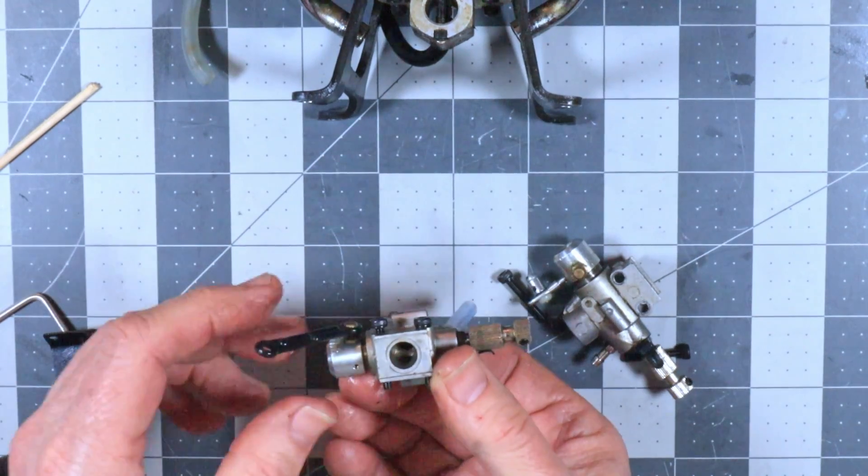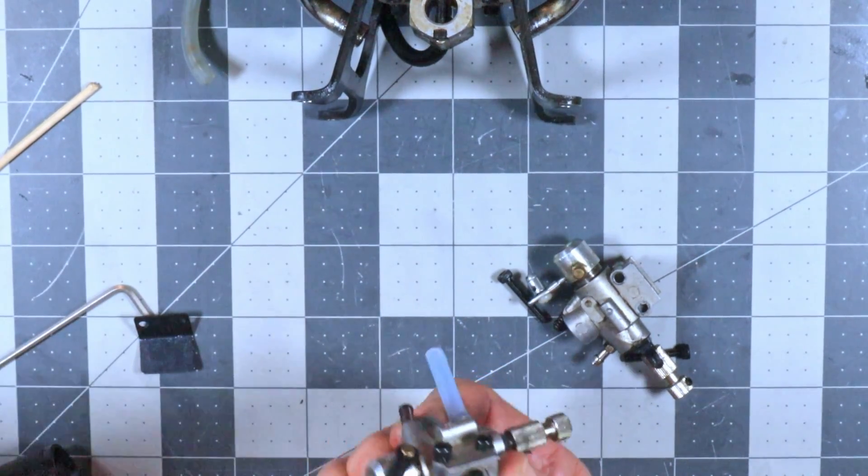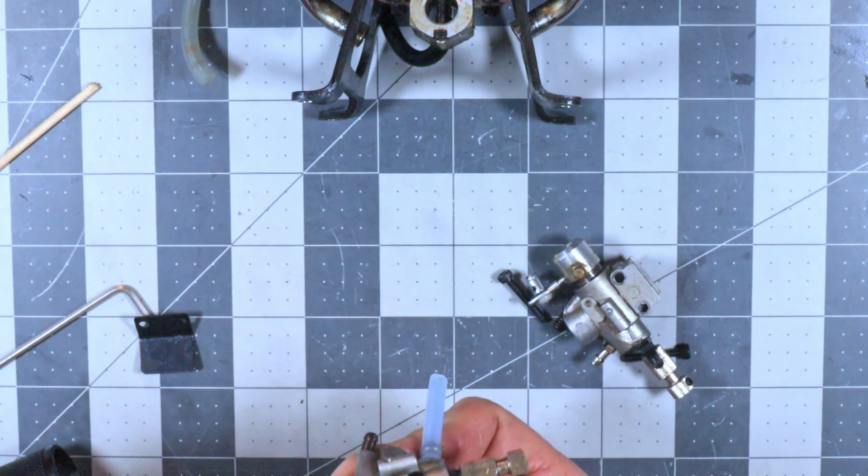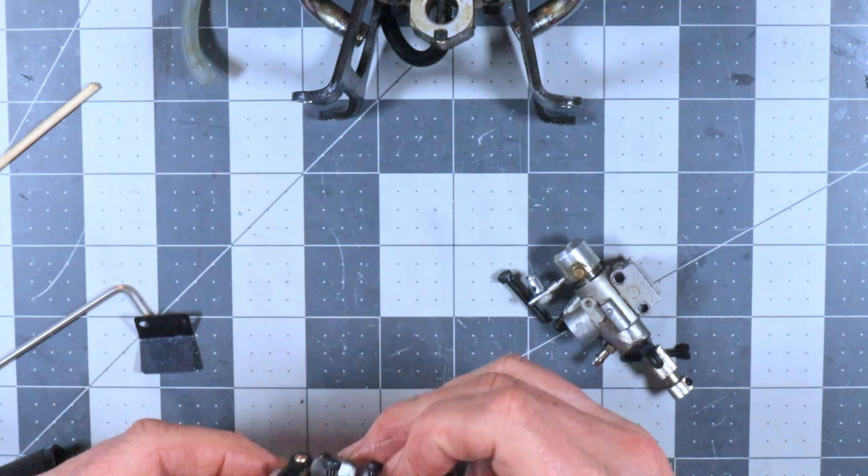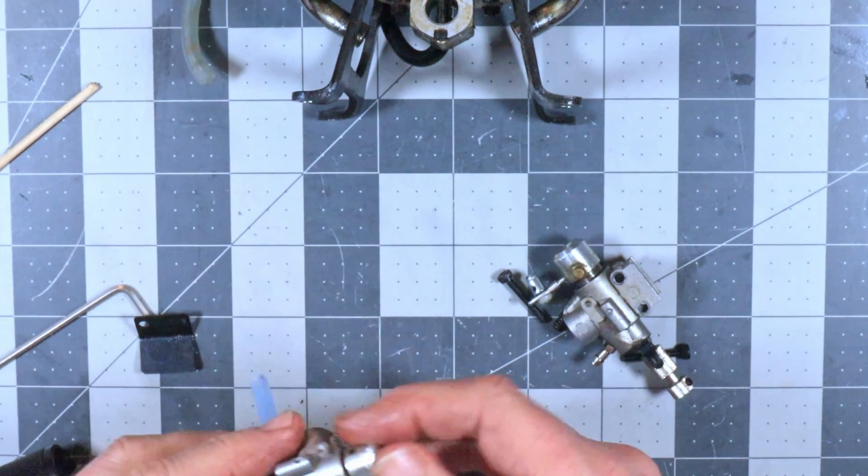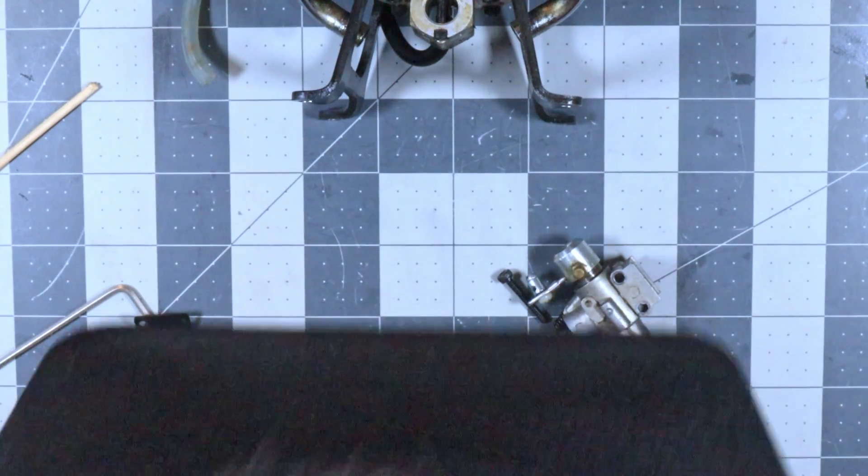Now, so I've got the high speed needle closed so I'm not getting any air through there. I'm holding my finger over this so I'm not getting air there. Which is sealed anyway. And I must have this idle speed screw closed completely. So what I need to do is hold this, blow this, hold this, hold that at the same time I'm opening it.